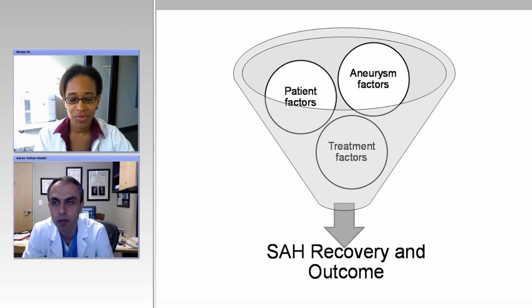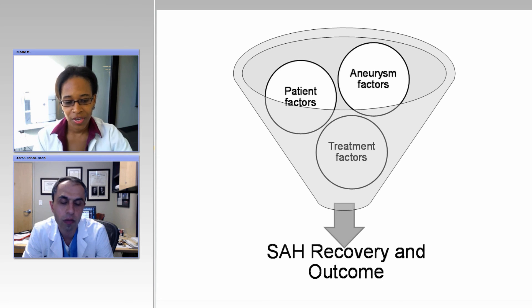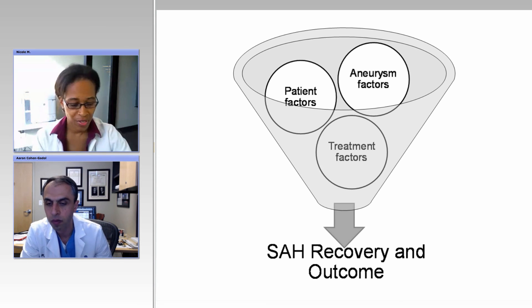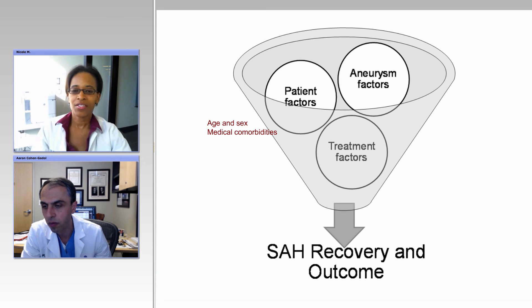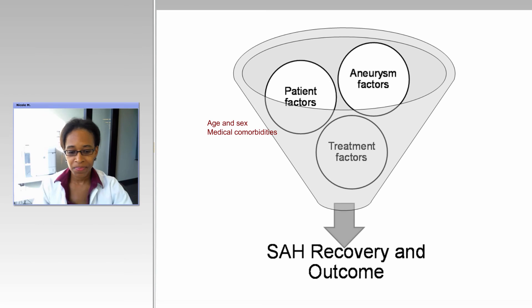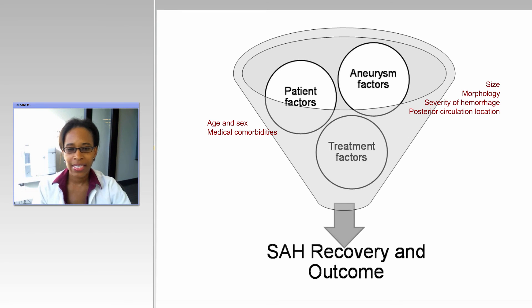There are actually several diverse influences that affect recovery in subarachnoid hemorrhage. This slide refers to those. There are three main groups. There are patient factors such as age and sex — things we cannot change — and also medical comorbidities. And there are aneurysm characteristics: the size of the aneurysm, the morphology or shape of the aneurysm, the severity of the hemorrhage — so how much blood is actually in the brain — and the location as well.